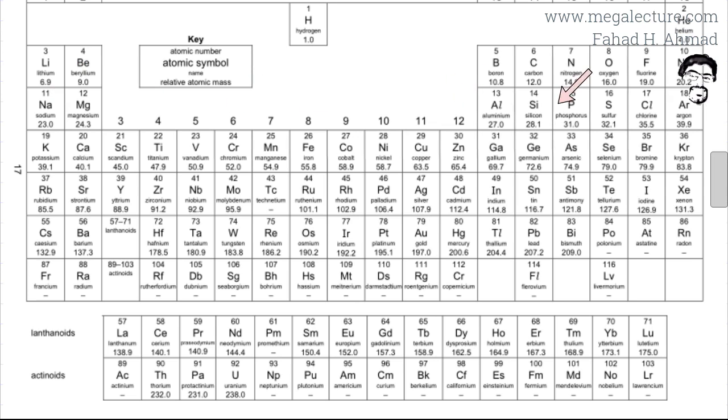But as you move to the right you can see that the number of protons, for example phosphorus has 15 protons, chlorine has 17 protons, so the number of protons or nuclear charge increases and if you have more nuclear charge, there is going to be more attraction for electrons.